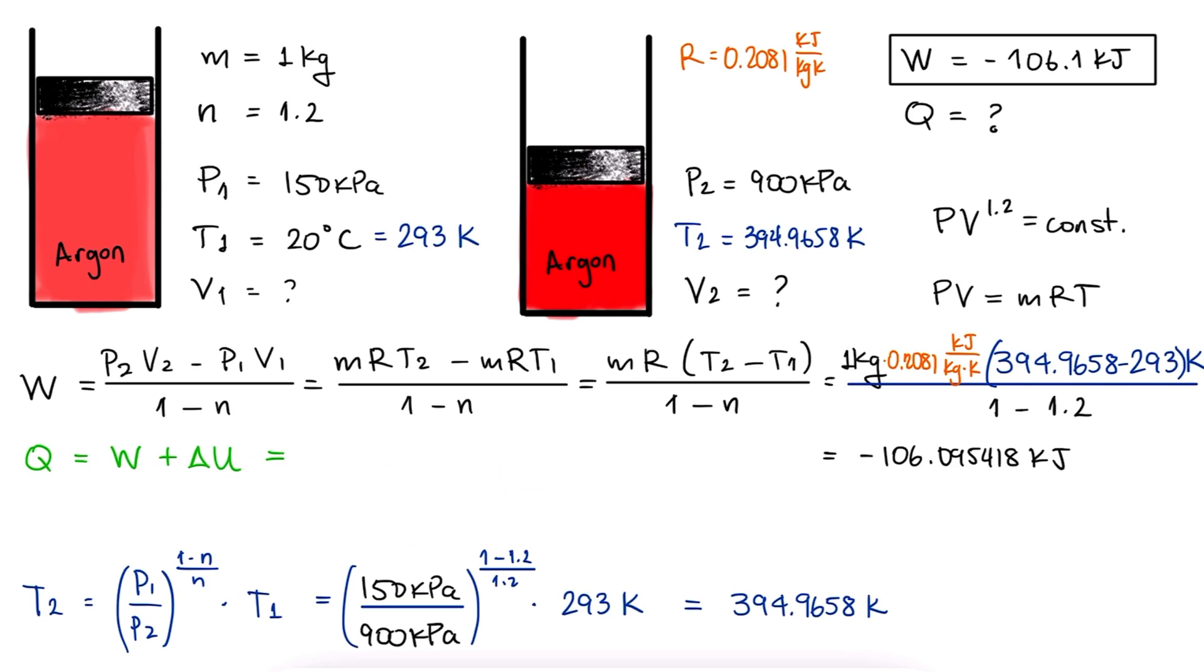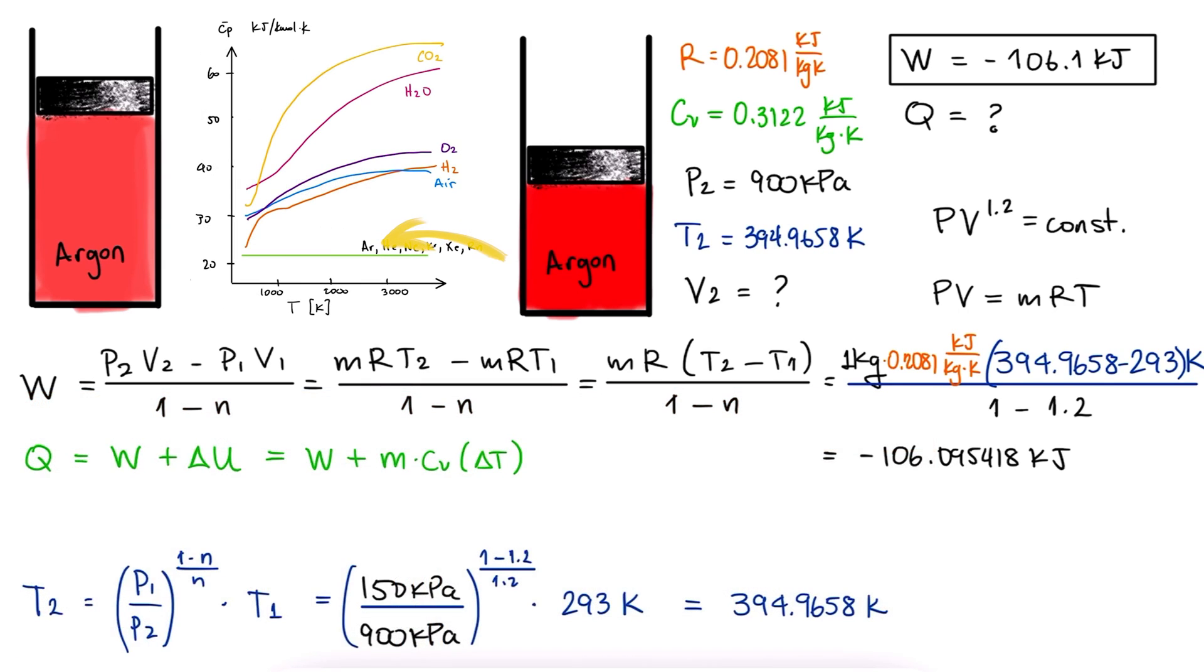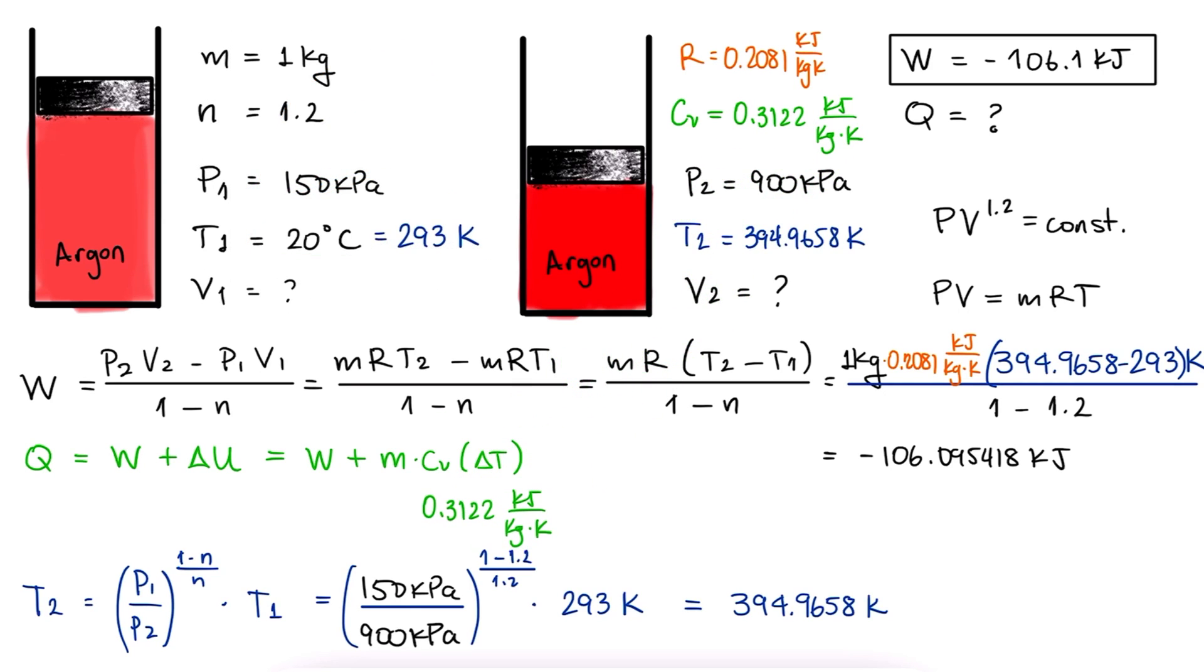This change can be found using MCV delta T, so we need the specific heat at constant volume for argon. We look it up, recalling that argon was one of the substances with constant values for its specific heats, substitute its value, the mass, the temperatures, and the work, to find that the transferred heat is minus 74.3 kilojoules.